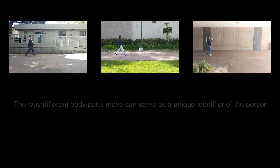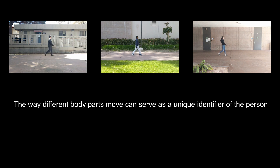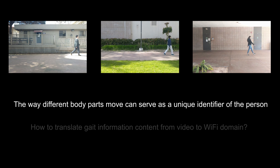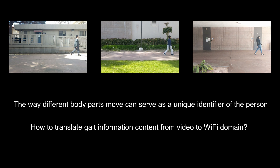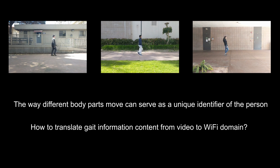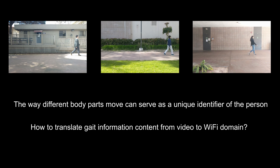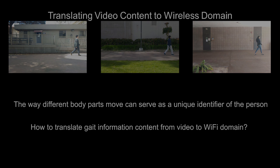The way each one of us moves is unique. But how do we properly capture and compare the gait information content of the video and Wi-Fi signals to establish if they belong to the same person?